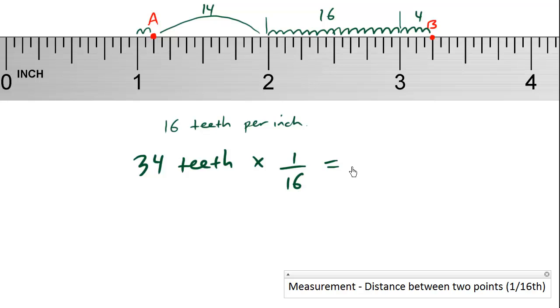Each tooth is 1/16th of an inch. So we multiply this, 34 times the width of each tooth, and what we get here is numerator times numerator is 34, and denominator times denominator, 1 times 16 is 16.